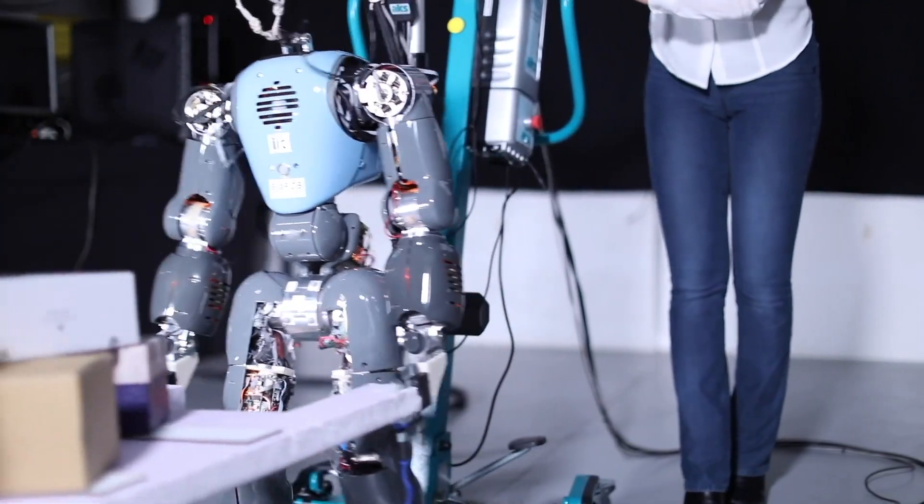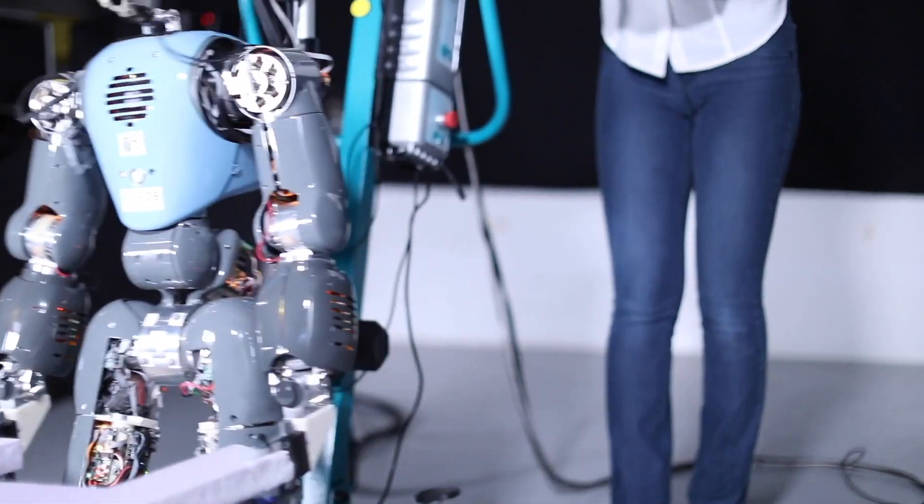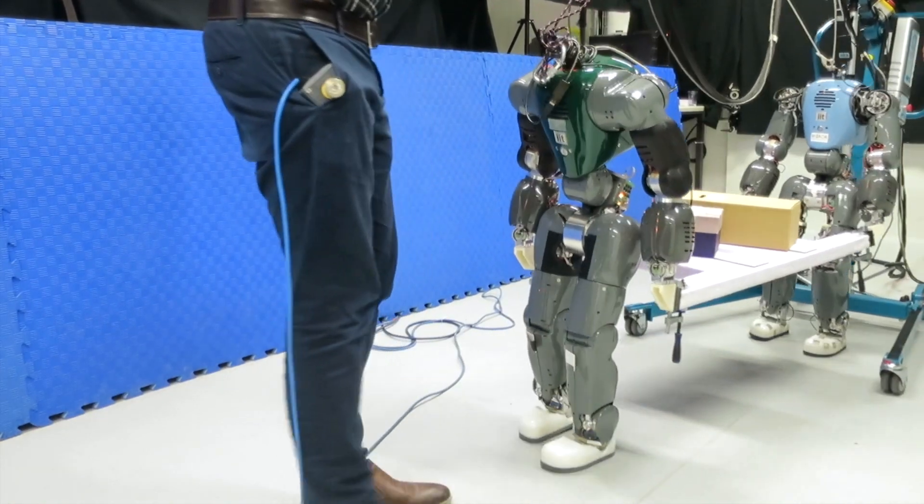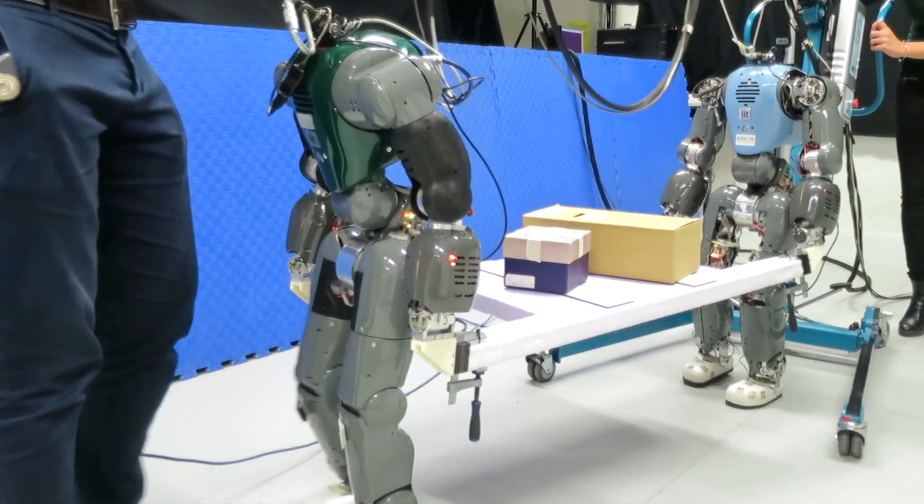We started by looking at how humans do this type of task and eventually discovered that synchronized gaits were preferred and that some information was very useful in order to interpret and predict our partner's intention. Through this result, we were able to achieve a very nice scenario with two humanoid robots carrying objects together.